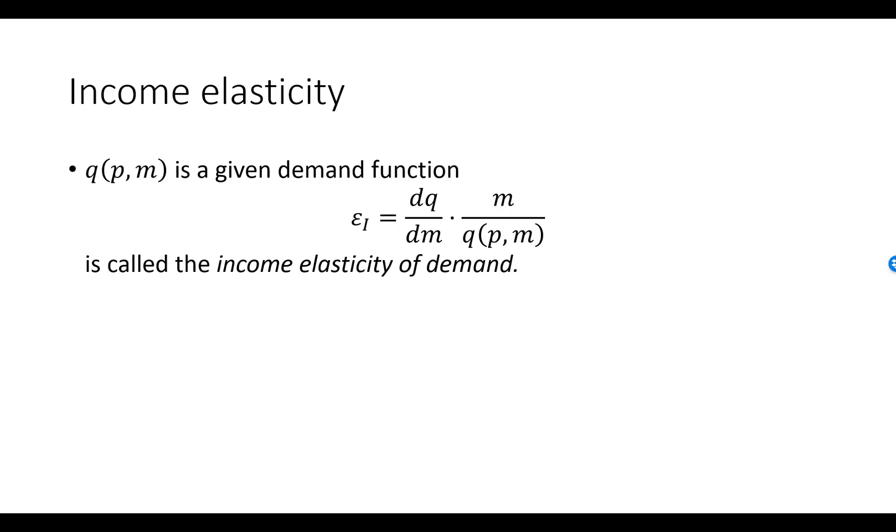The interpretation is that the income elasticity of demand measures approximately the percentage increase in demand when income increases by 1%. The argument for this interpretation is very similar to the argument we use to say that the price elasticity of demand measures the approximate increase in demand when price increases by 1%. The income elasticity of demand is approximately equal to delta q over q divided by delta m over m which, after multiplying by 100 on both sides, is the percentage increase in demand divided by the percentage increase in income.